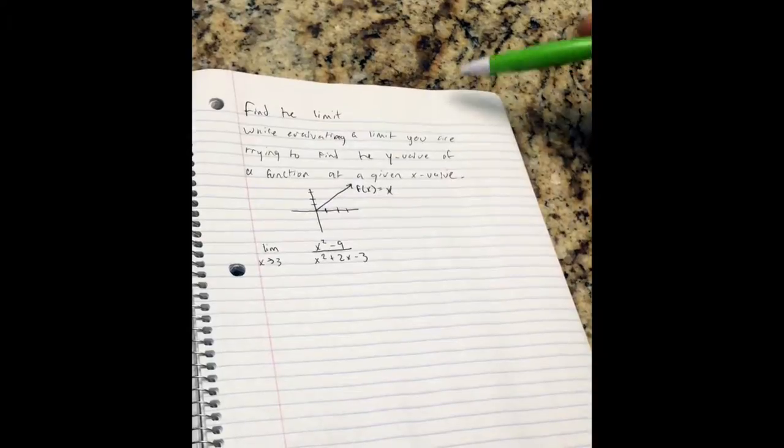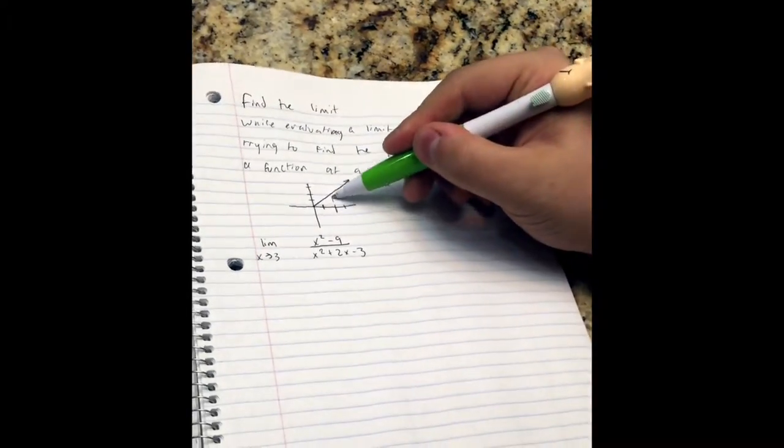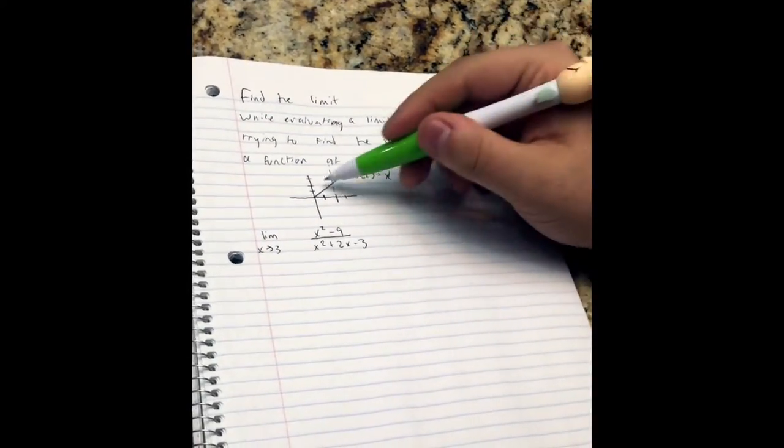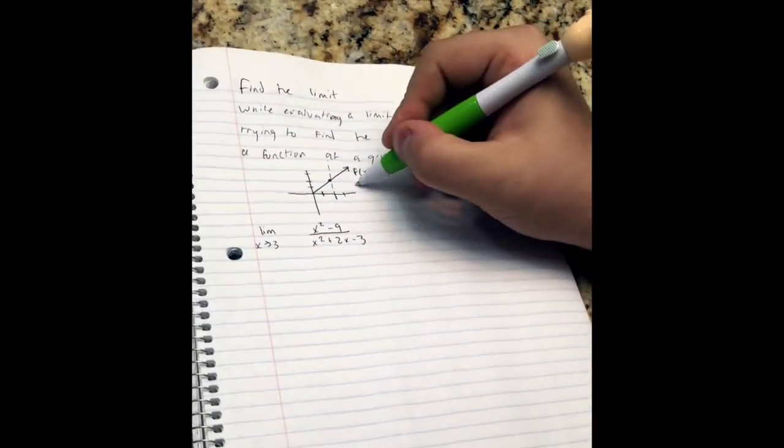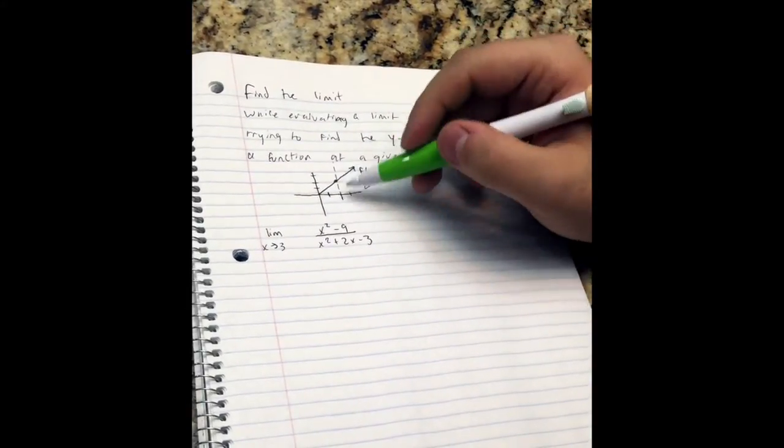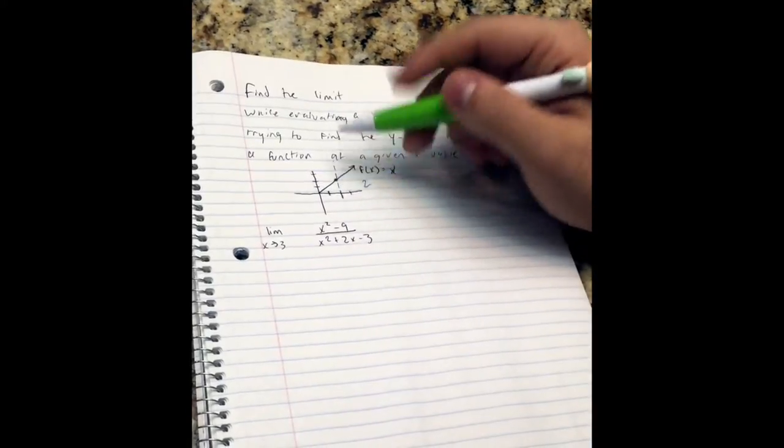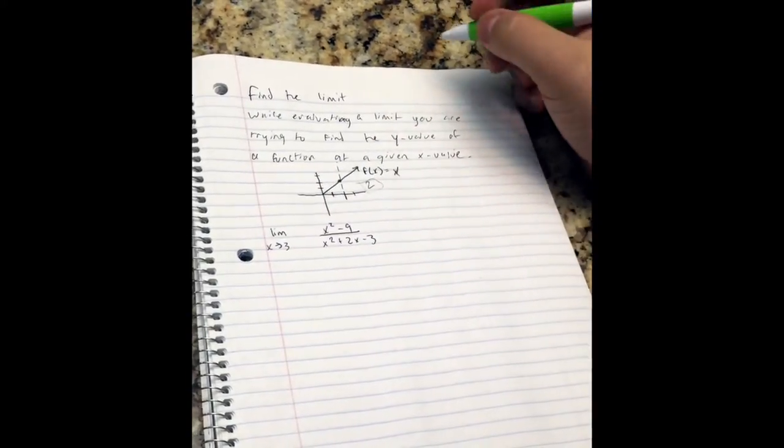So say I gave you the x value of 2. What you are looking for is the y value at the x value, which would be 2. So the limit as x approaches 2 would be 2, in this case.